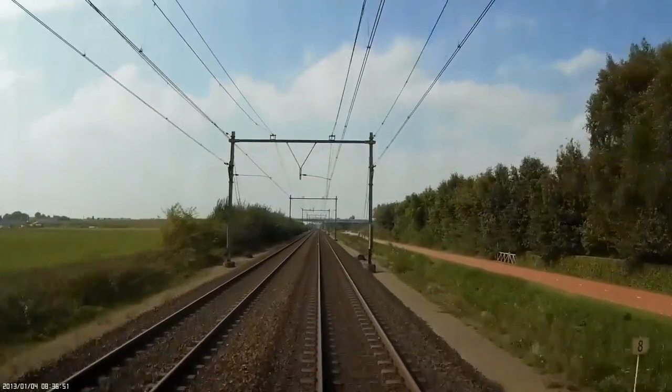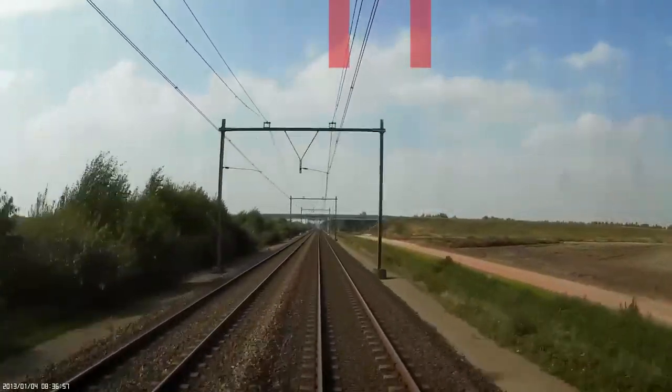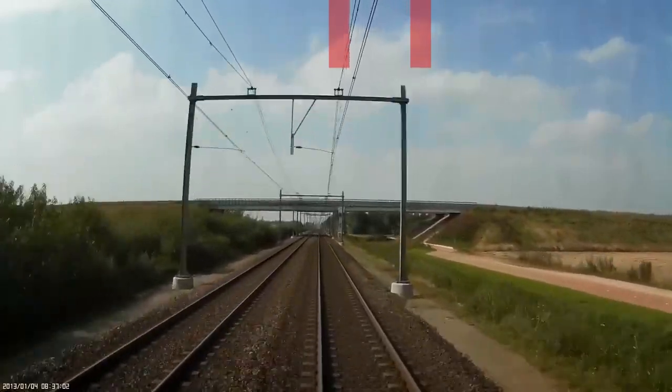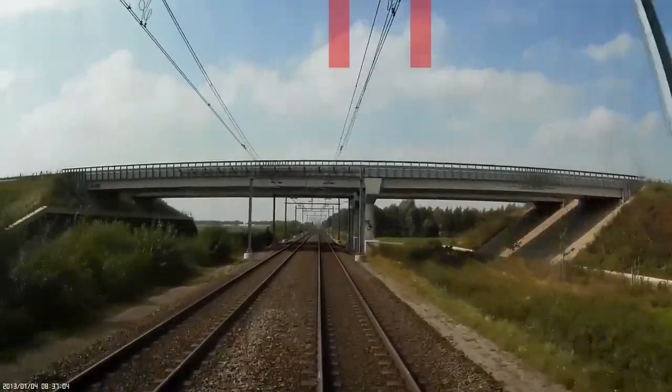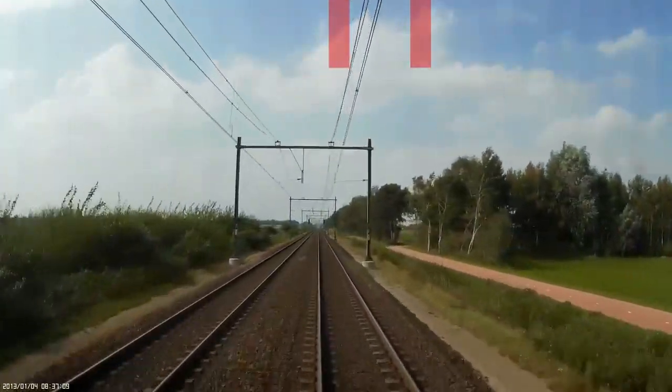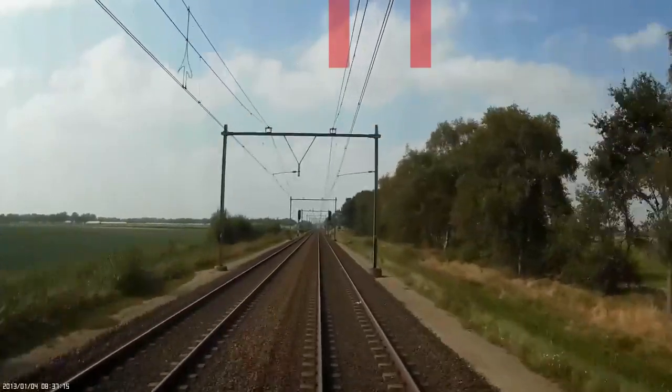This can be easily seen from the perspective of the pantograph. Differences can be found between the alignment of the messenger and the contact wire. They can be mounted parallel to each other, where they both describe a stagger motion, or the messenger wire is aligned with the track and only the contact wire follows a stagger motion, which you can see in the video.